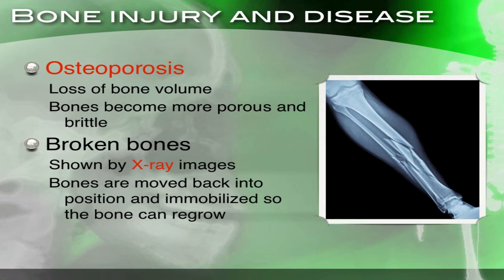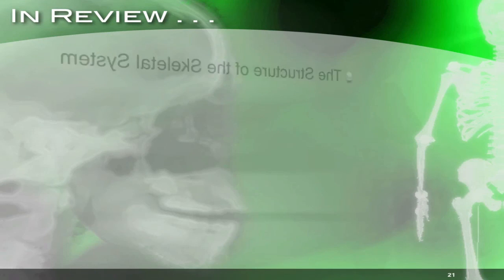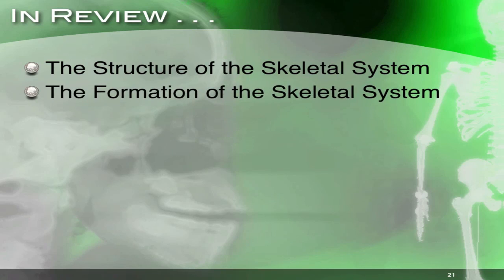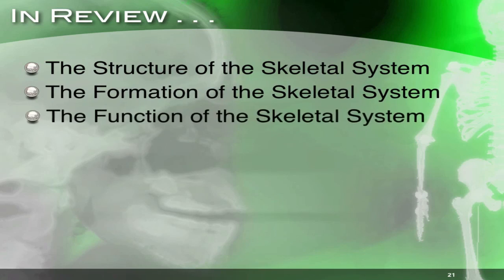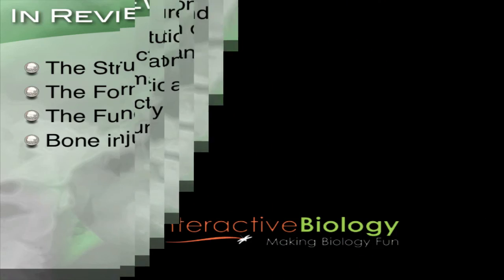That is the end of section two. In review, we looked at the structure of the skeletal system, the formation of the skeletal system, the function of the skeletal system, and lastly we spoke about bone injury and disease.